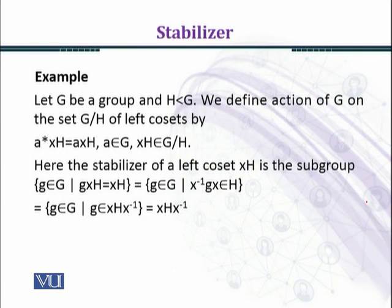Let's consider another example. Let G be a group and H be a subgroup of G. We define action of G on the set G/H of left cosets by a star xH equals axH, where a belongs to G and xH belongs to G/H.